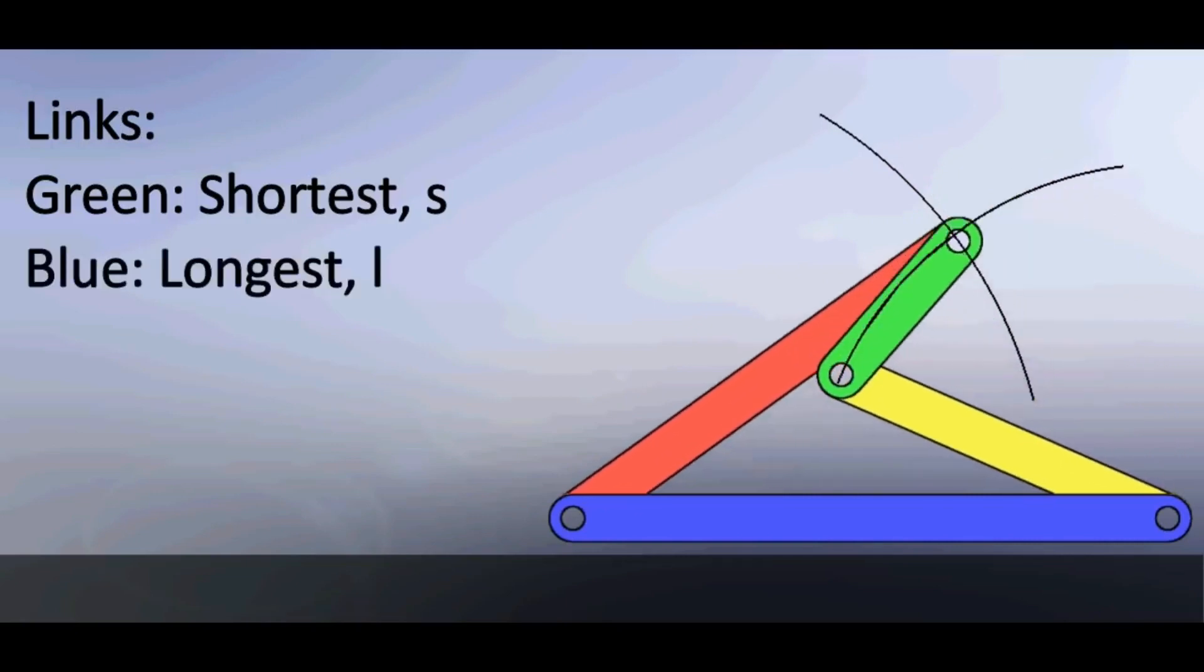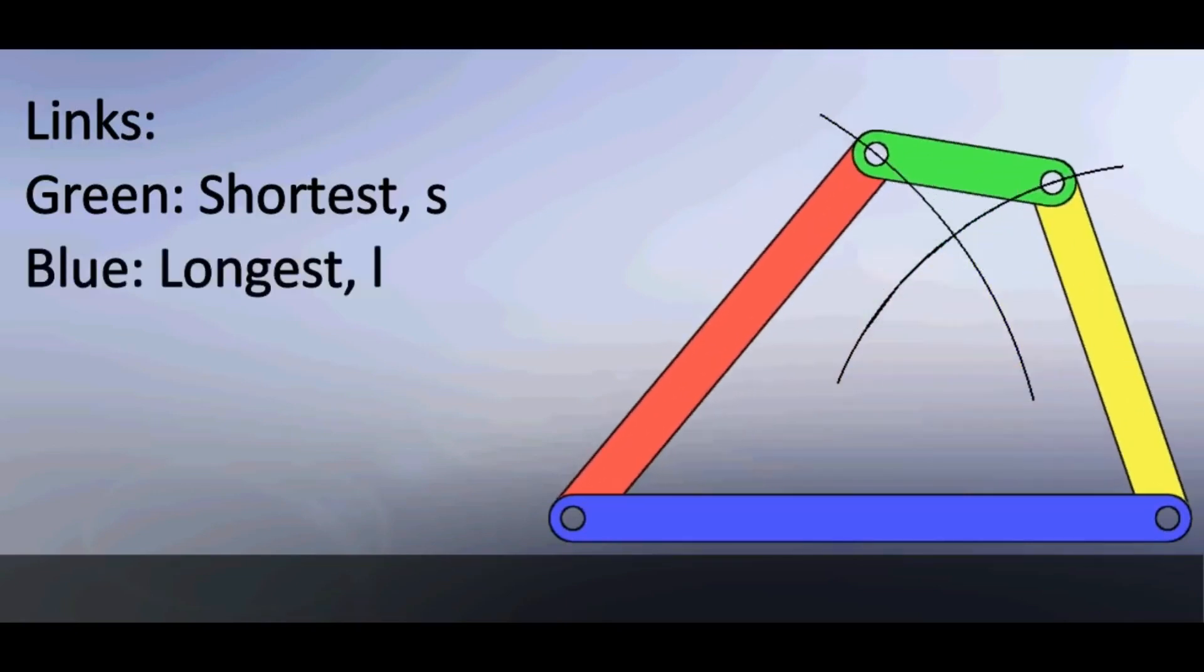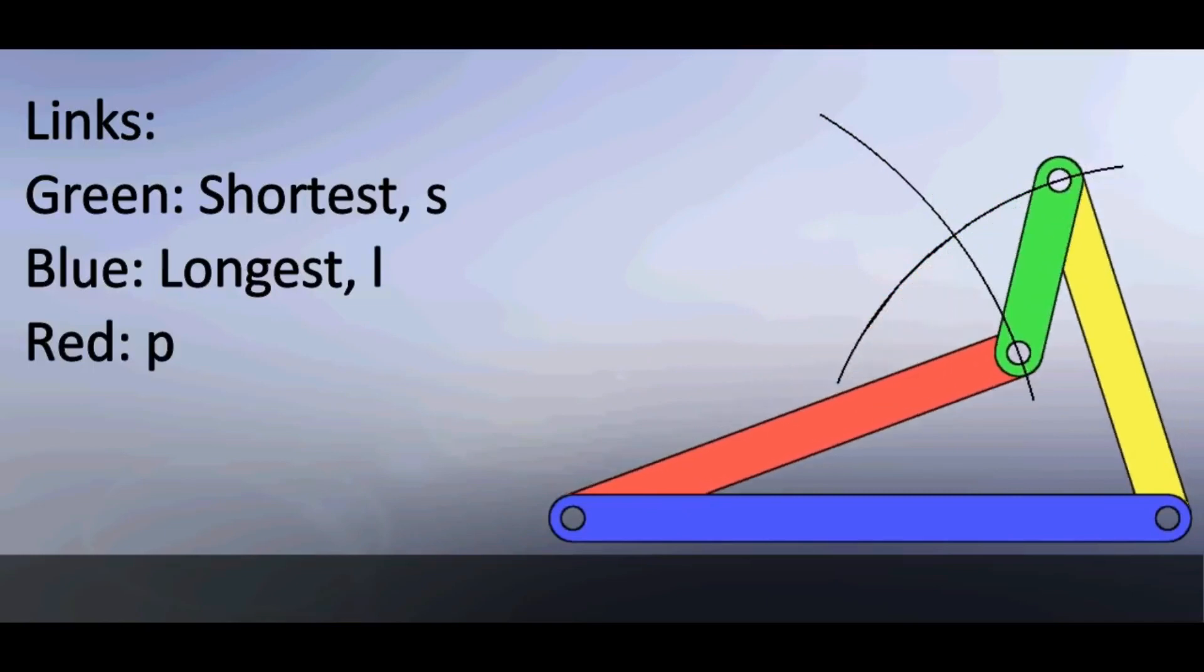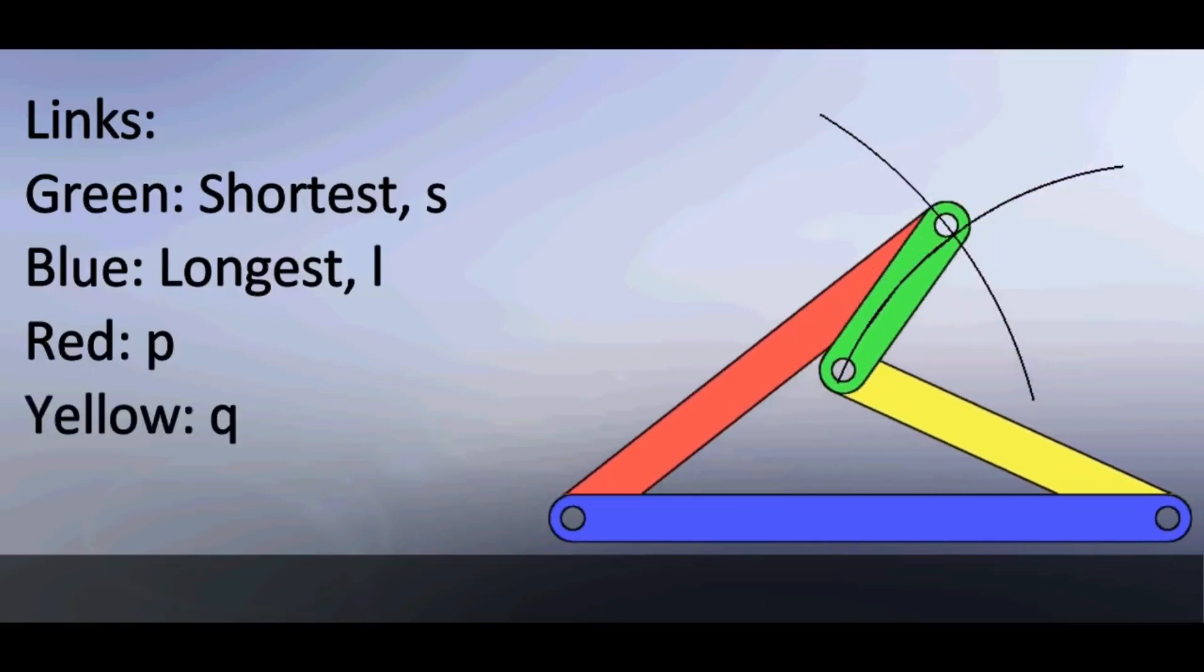Blue link is the longest. Let's name it by letter l. Let's call red link by letter p and yellow link by letter q.